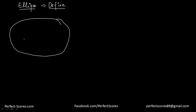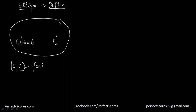Likewise, an ellipse has two points. These are known as the focus of the ellipse. This is the first focus and this is also a focus of this ellipse. Together they are known as the foci of the ellipse — F1 and F2 together are known as the foci of the ellipse.